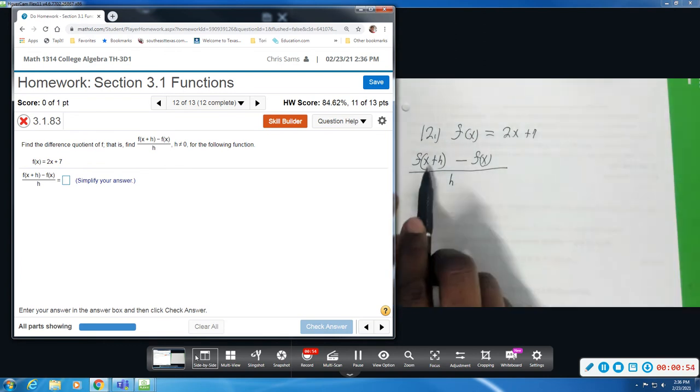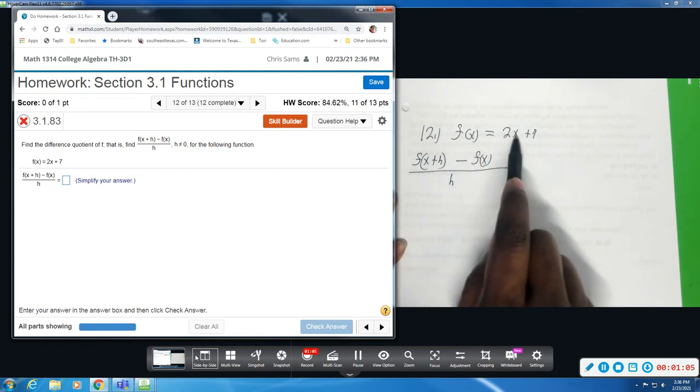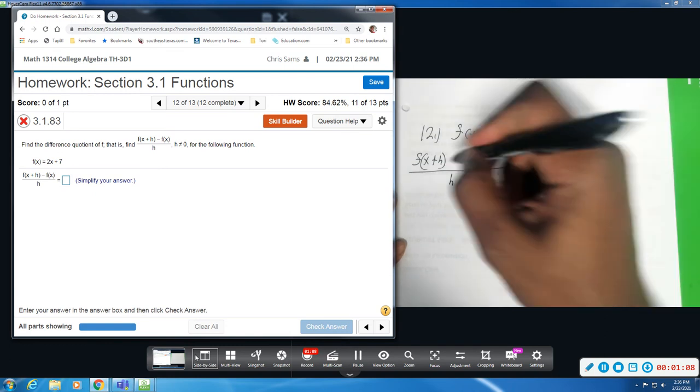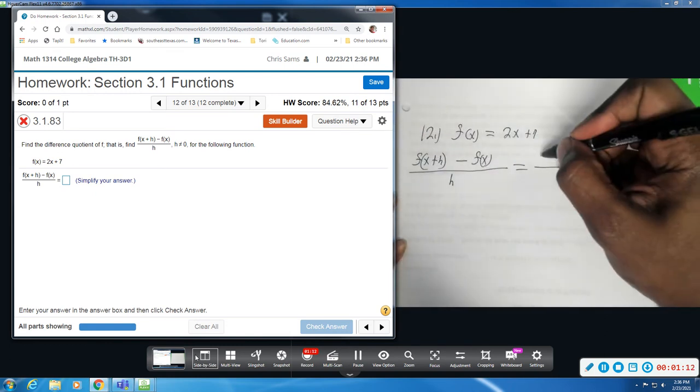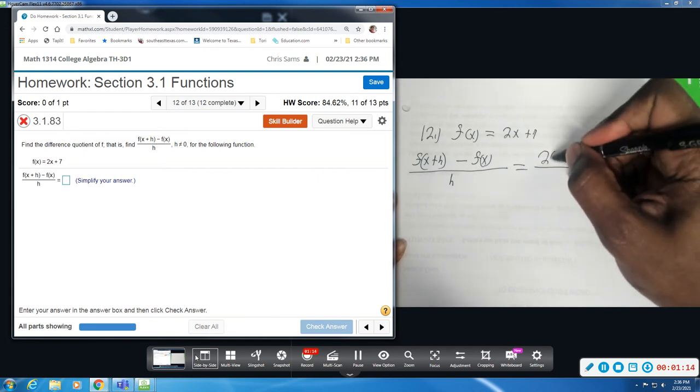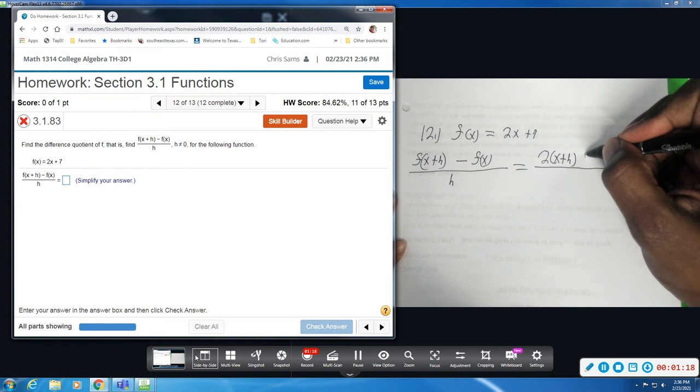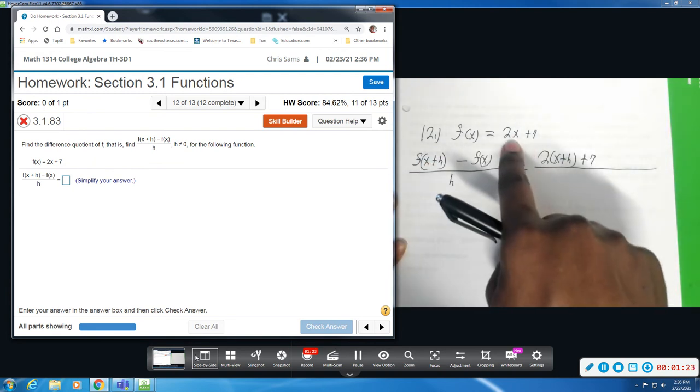So what does this mean? It means you are going to plug in x plus h and you are going to plug it in for x in the original equation. So, I am going to plug in the x plus h right here and have my plus 7. So for this f of x plus h it is going to be 2 and then x plus h and then add your plus 7. This is what this means. You just plug in x plus h to the original equation.